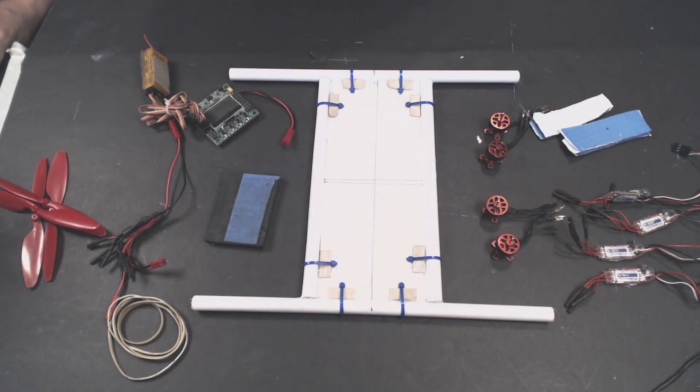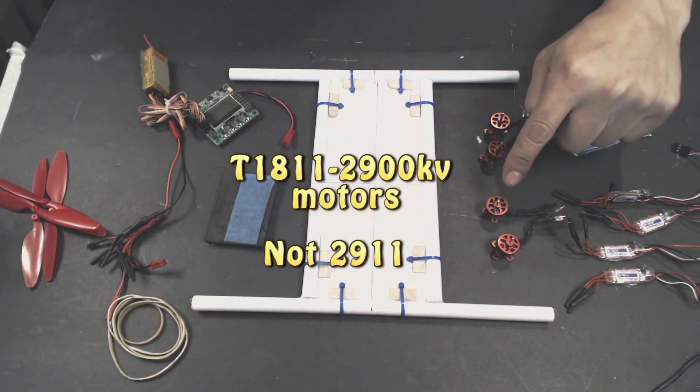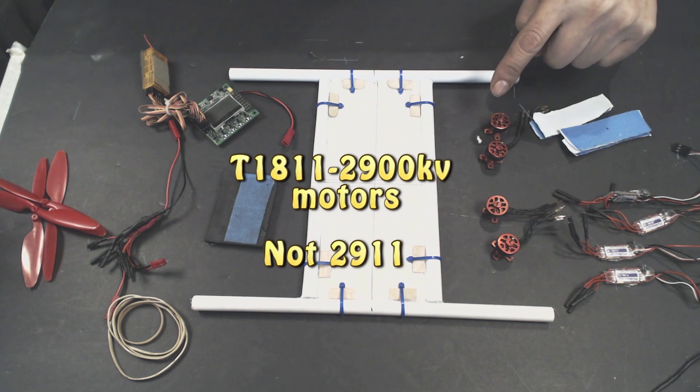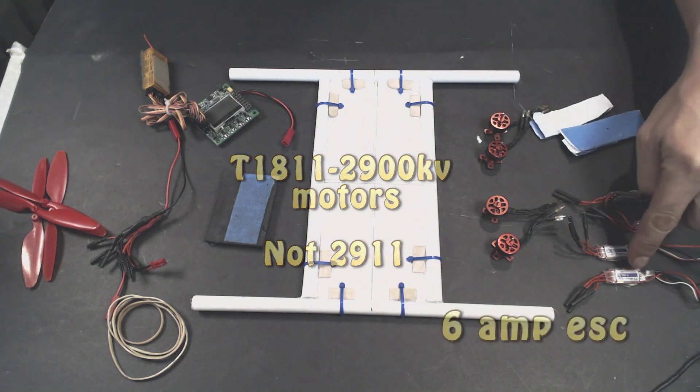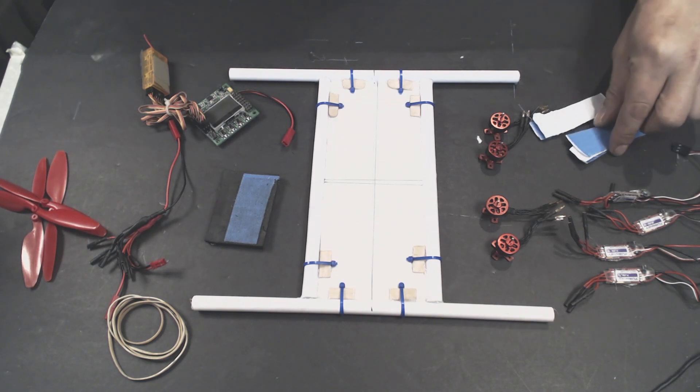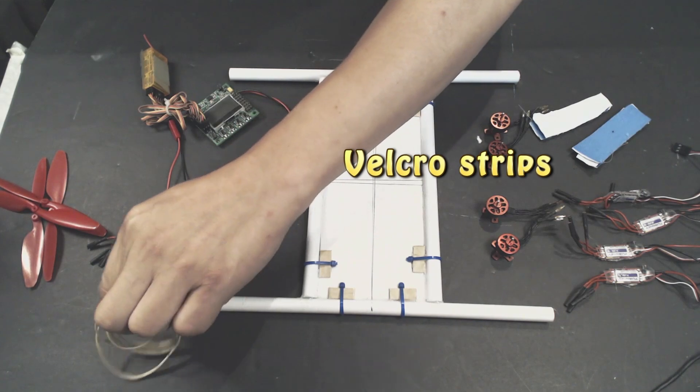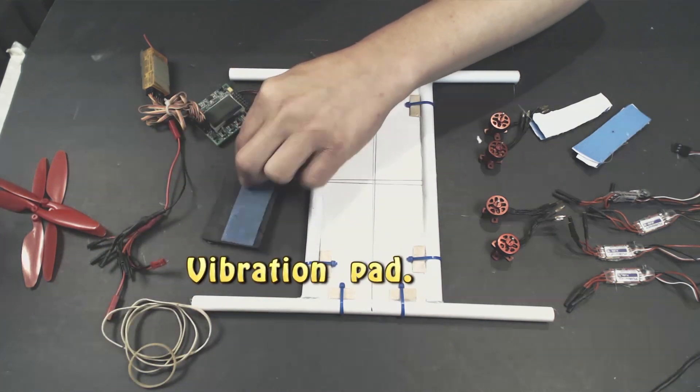Okay, this is part 2, electronics for the Papyrus paper quadcopter. First we're going to need the frame that we built. I'm not going to go into great details, but we have four motors, these are 2911 Turnigy. These are Turnigy ESCs, 6 amps, two velcro strips, rubber bands, and a vibration pad that I got from the KK box that I cut up.